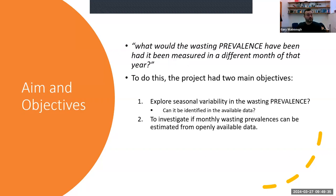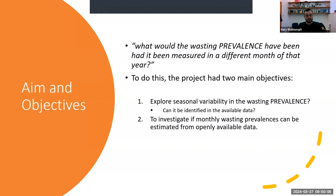We ended up using the Demographic Health Survey as a placeholder to establish these methodologies. We adapted the aim and objectives as the project progressed, looking at what wasting prevalence would have been had it been measured in a different month of that year. It's really about the shifting patterns of climate, temperatures, food availability, and food access — those are the two things we were focusing on — and we use the monthly data to map those seasonal cycles.